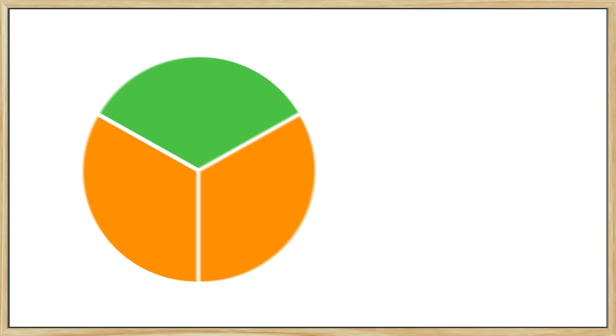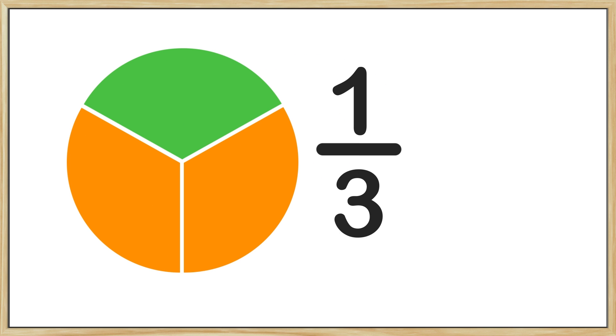A fraction represents an equal part of a whole or a group. Here is one whole circle, this is a fraction 1/3. The 3 or bottom number in a fraction is called the denominator. The denominator tells how many equal parts there are. To be a fraction all parts must be equal. We have three total parts that make up the whole circle.